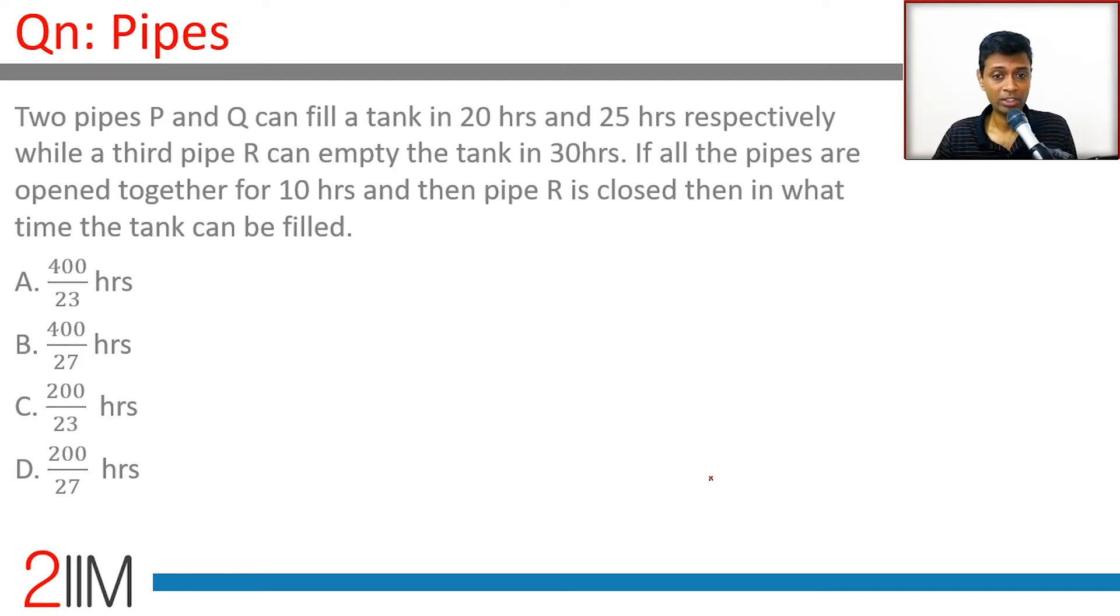Pipe P fills in 20 hours, so in 1 hour it can do 1/20. Pipe Q fills in 25 hours, so in 1 hour it can do 1/25. Pipe R empties in 30 hours, so in 1 hour it can empty 1/30.